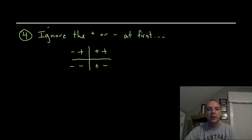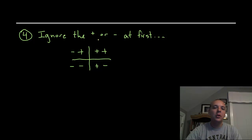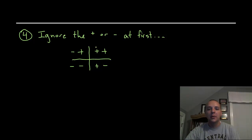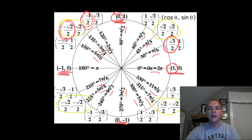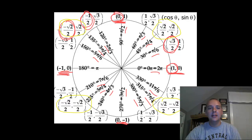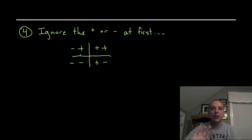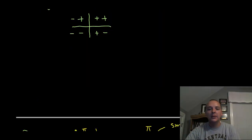My last tip for remembering the points: don't worry about the signs at first — the plus or minus. Just try to remember what the numerical values are, and then when you're about to write down the answer, consider the sign based off of what quadrant it's in. In the first quadrant every point's x and y values are positive. In the second quadrant it's negative then positive. Third quadrant: negatives and negatives. Fourth quadrant: positives then negatives.